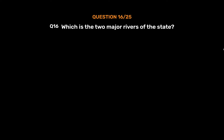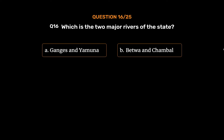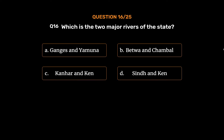Question No. 16: Which are the two major rivers of the state? Option A: Ganges and Yamuna. Option B: Betwa and Chambal. Option C: Kanhar and Ken. Option D: Sindh and Ken. The correct answer is Option A: Ganges and Yamuna.